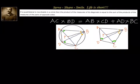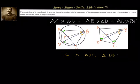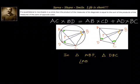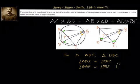Let us first write down which triangles are similar. Consider triangles ABP and DBC. Looking at these two triangles, we have angle ABP equal to angle DBC by our construction. Not only that, we also know that angle BAP is equal to angle BDC, because these are angles in the same segment.